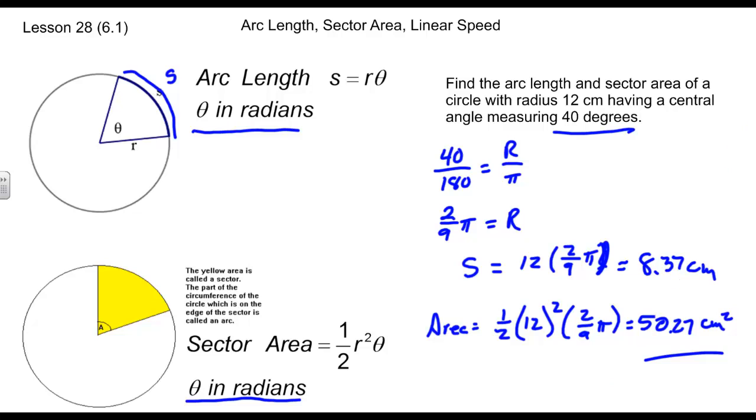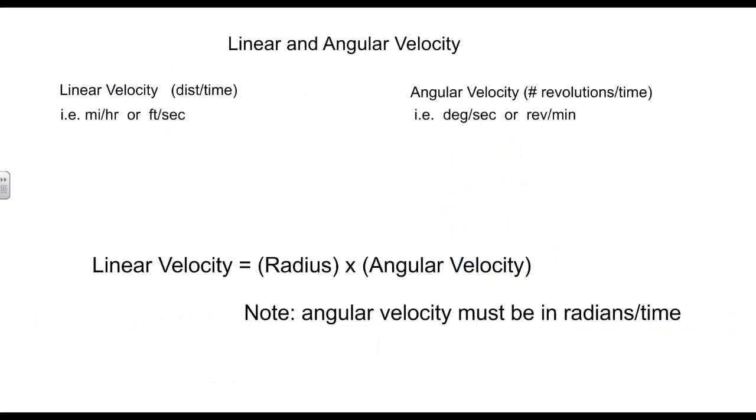Plug and chug for the most part. We talked linear and angular velocity, or linear speed and angular speed. Linear speed is something that's done on a straight line. We measure that usually feet per second, miles per hour, etc.